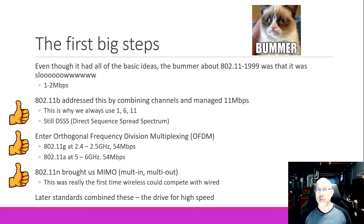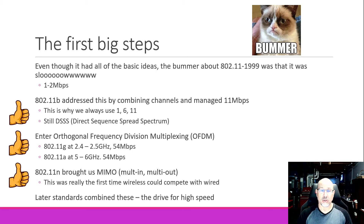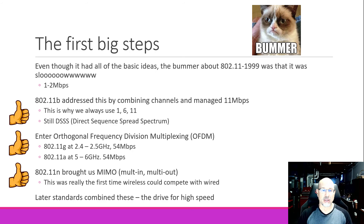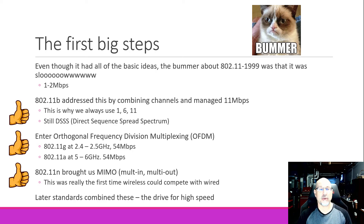With 802.11a and g, the two next steps, we got higher speeds — 54 Mbps. How did we get higher speeds? Orthogonal frequency division multiplexing — that was the next big step, and we'll talk more about that later on. 802.11g stayed in 2.4 to 2.5 GHz, but 802.11a moves to 5 GHz — really a range of frequencies from 5 to 6 GHz.